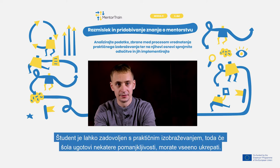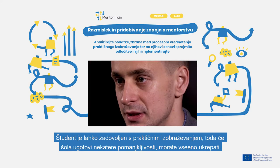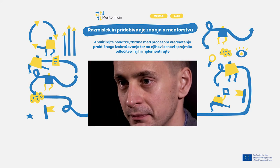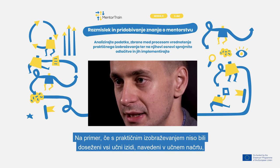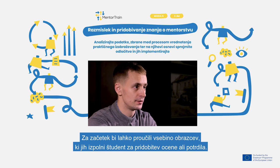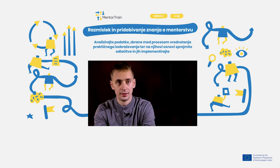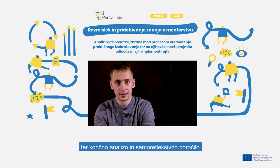A student might be satisfied with the apprenticeship, but if the school sees significant shortcomings, you still need to take action. For example, if the apprenticeship did not fulfill all the learning outcomes stated in the syllabus, you still need to include them in your mentoring plan. A first step could be to evaluate the contents of the templates filled by the student to get an assessment or a certificate — this may include analysis of the company, a daily diary, a final analysis, and a self-reflection report.